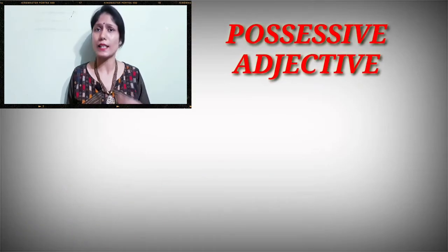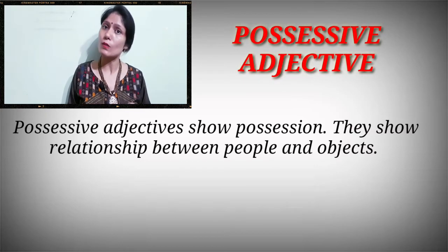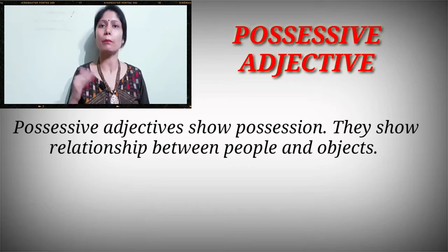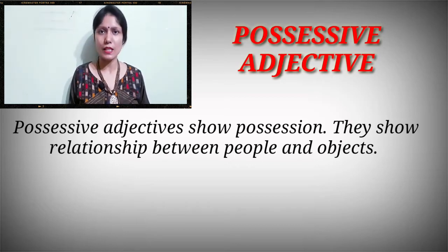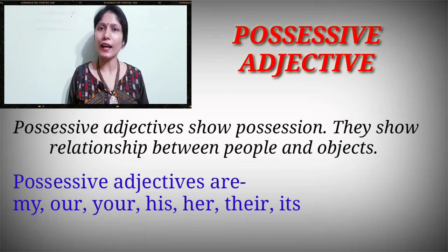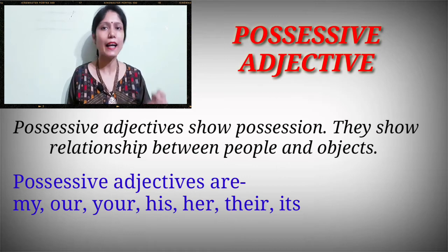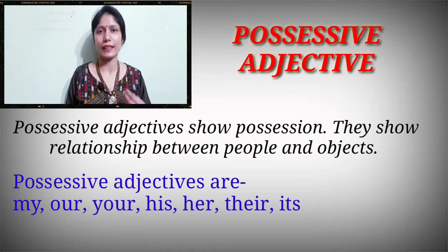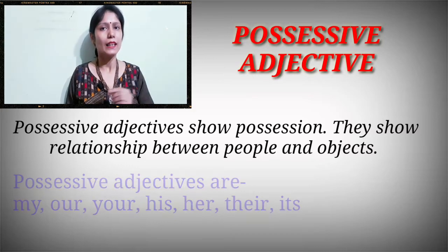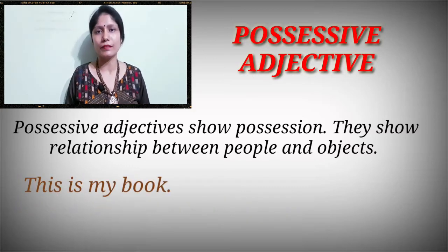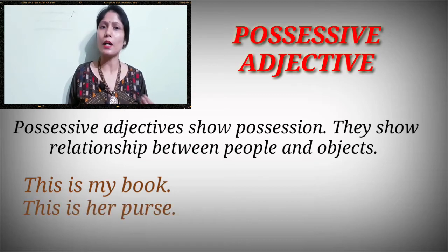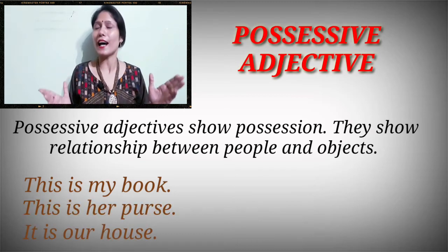Now, what are possessive adjectives? Possessive adjectives also show possession — they also show the relationship between people and objects. The possessive adjectives are: my, our, your, his, her, their, and its. For example: 'This is my book,' 'This is her purse,' 'It is our house.'